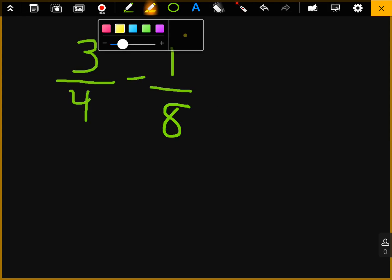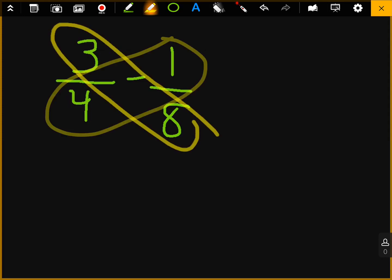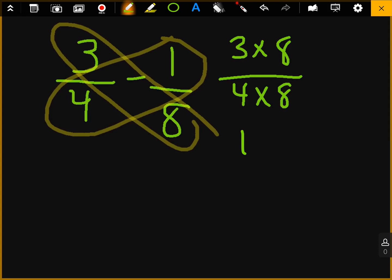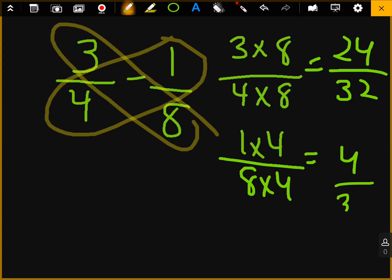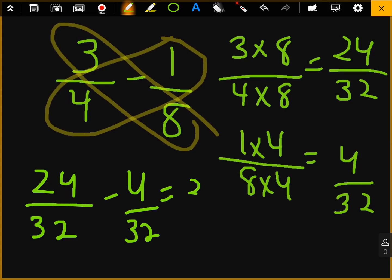Now, if you want to do the butterfly method, you could. Three over fourth minus one over eight. And you will still get, it might be a different answer. Let's go ahead and look. Three, so we're going to do three times eight, four times eight, one times four, eight times four. Three times eight is 24. Four times eight is 32. Four times one is four. Eight times four is 32. And then we do 24 over 32 minus four over 32, which gets us 20 over 32.